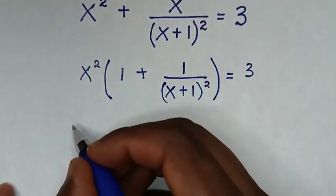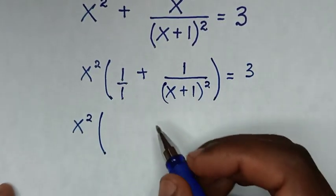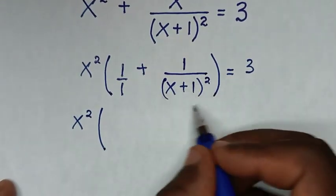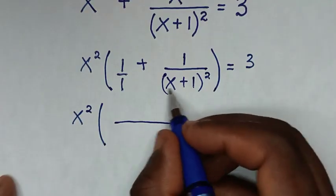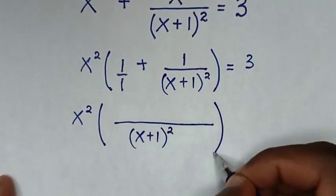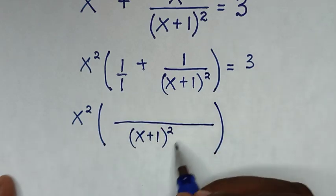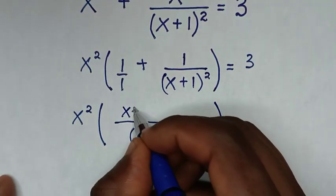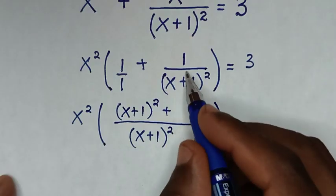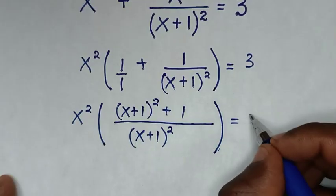Then in the next step, it will be x² times the bracket. This 1 is the same as 1/1. Then the LCM of 1 and (x+1)² is (x+1)². So it will be over (x+1)². This divided by this is (x+1)², so this times 1 is (x+1)². Then plus this divided by this is 1, and 1 times 1 is 1. Then it will be equal to 3.